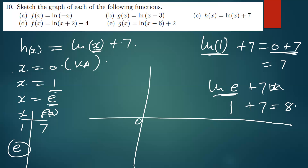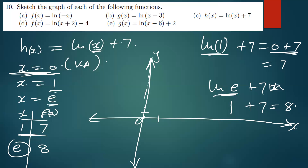The vertical asymptote is x equals zero — along the y-axis. We plot (1, 7) and (2.7, 8). Counting up: seven is somewhere there, eight is above it. The curve moves in that direction and must not cross the vertical asymptote.